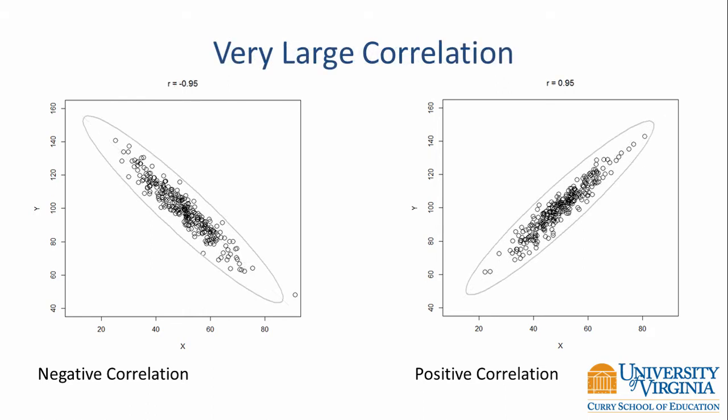This slide shows two very strong correlations. On the left, we have a correlation of negative 0.95, with an ellipse drawn around the points showing they are very tightly grouped and slope downward from left to right. On the right, the correlation is positive 0.95. The ellipse also reflects tight grouping of points with a clear upward slope. When we have a large positive or negative correlation, the points don't fall exactly on a line but are still tightly grouped together.